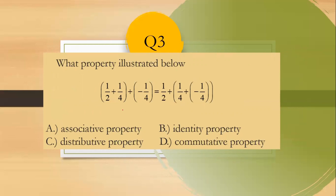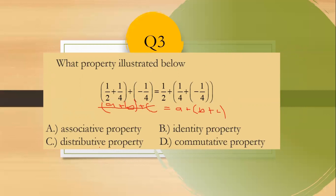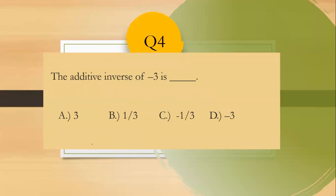Question number three: What property is illustrated by the equation (1/2 + 1/4) + (−1/4) = 1/2 + (1/4 + (−1/4))? As we observe, the groupings are changed. This is your A, this is your B, and this is your C. The left side groups A with B, and the right side groups B with C — the regrouping of addends. Since this involves changing groupings, this is the associative property. The answer is letter A.